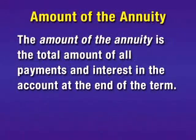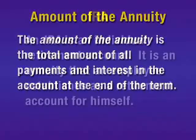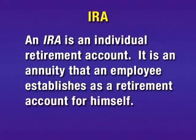The amount of the annuity is the total amount of all payments and interest in the account at the end of the term. And an IRA is an individual retirement account. It is an annuity that an employee establishes as a retirement account for himself.